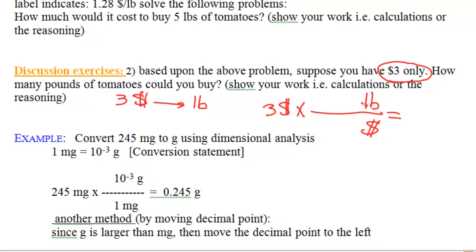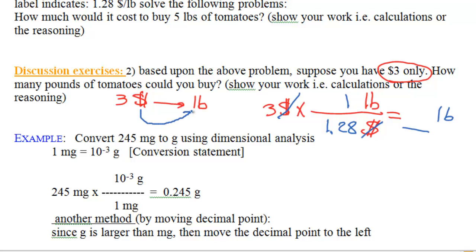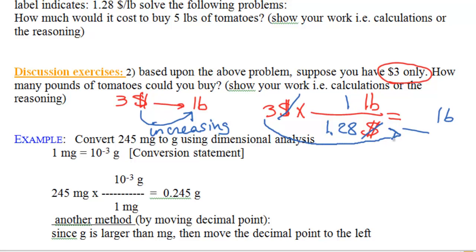Plugging in the numbers: 1 pound equals $1.28 — dollars cancel and we divide 3 by 1.28 to get the answer in pounds. Since we are converting from dollars to pounds and 1 pound is worth $1.28, pound is bigger than dollar, so we are going from a small unit to a bigger unit. When we increase the unit, the number decreases, so the answer will be less than 3.